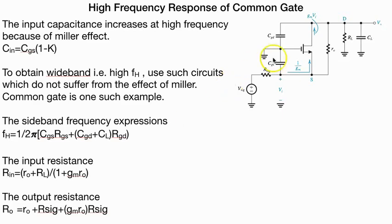C_GS into R_GS, C_GT plus C_L into R_G. R_in equals R_0 plus R_L times 1 plus g_m into R. R_out is R_0 plus R_signal plus g_m R_0 R_signal.